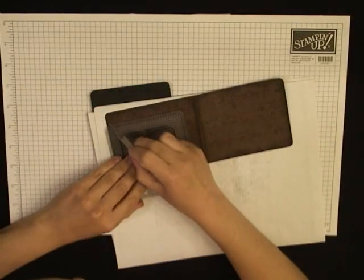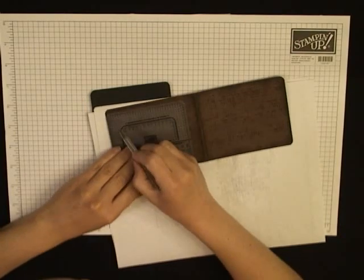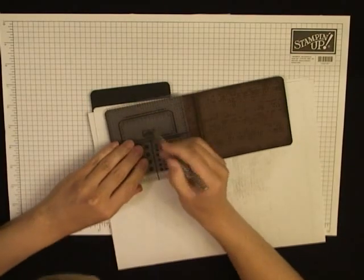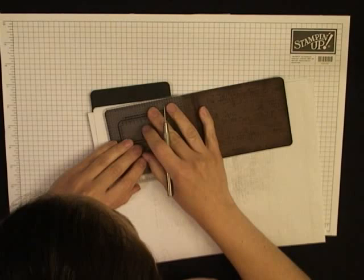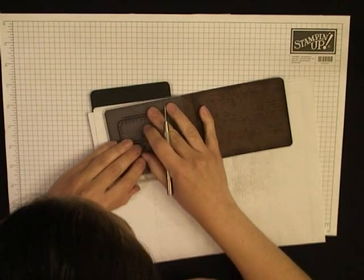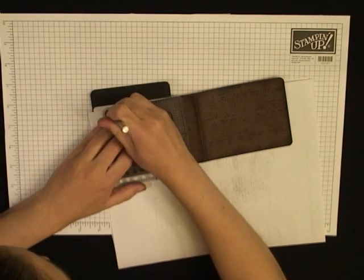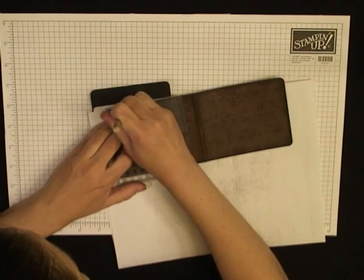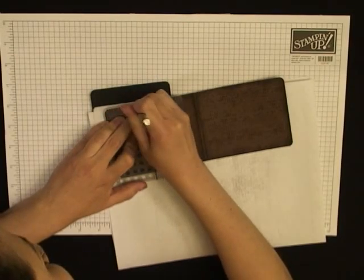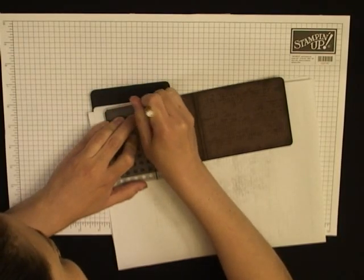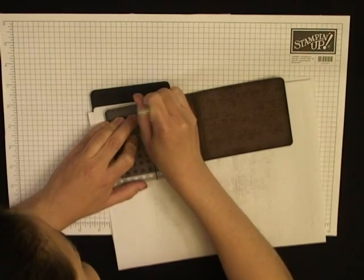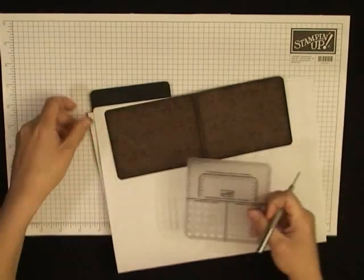Now I'm going to line up the edge of my chocolate chip card stock with this black line right here on the paper piercing guide like that and then pierce all along the way around the whole piece.